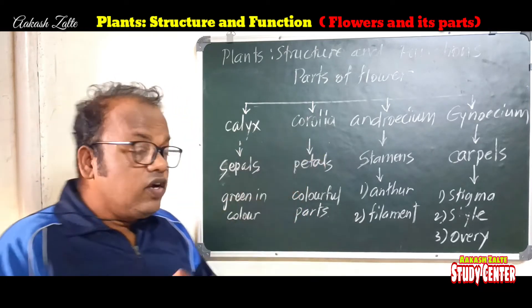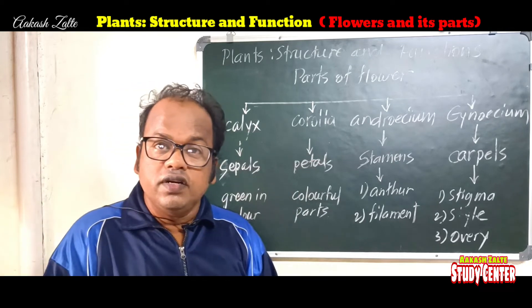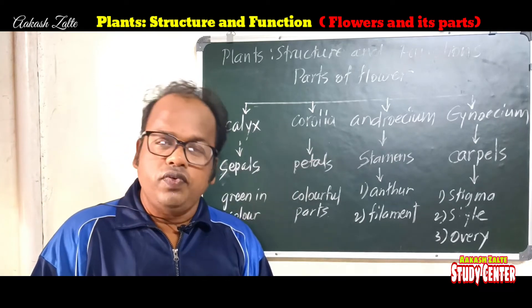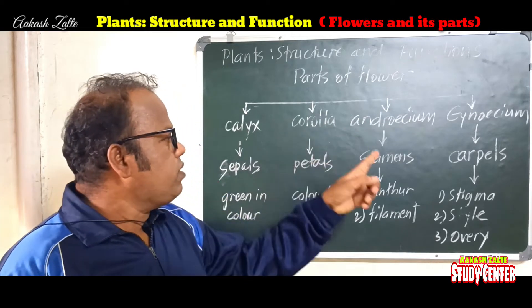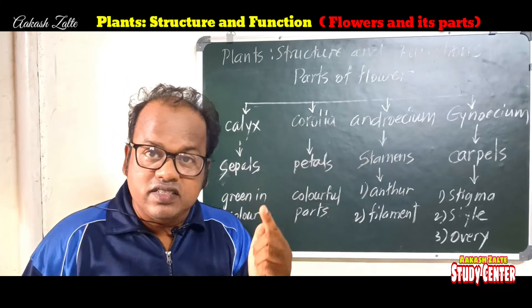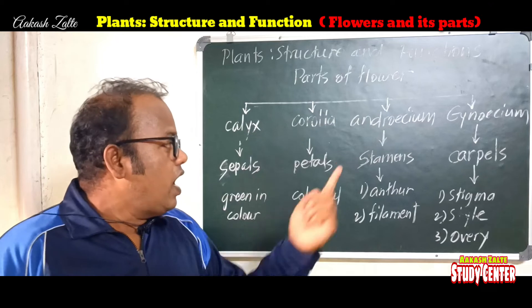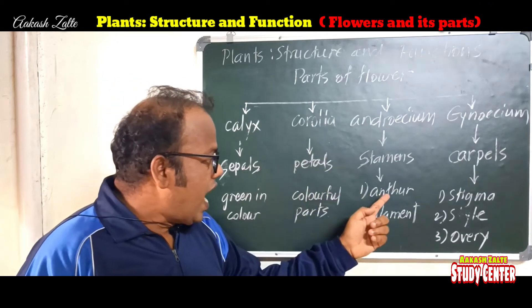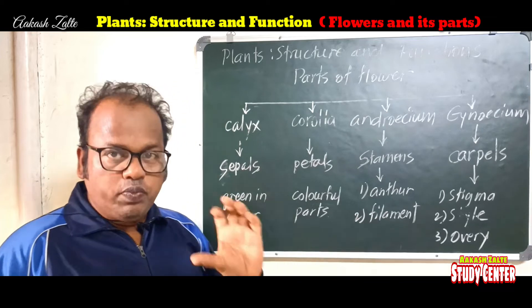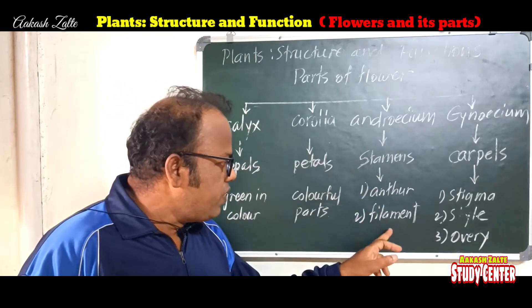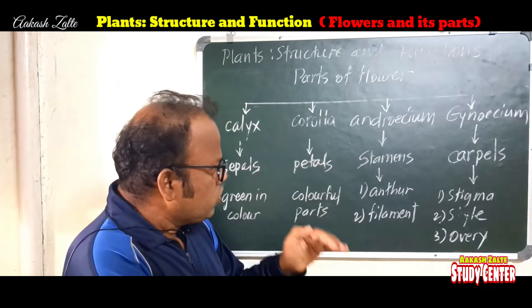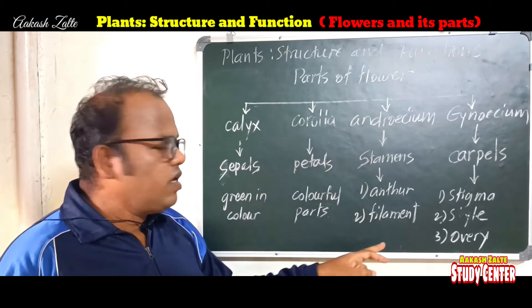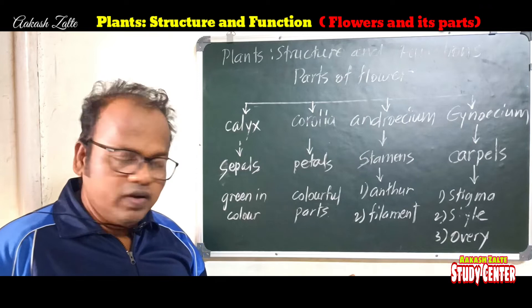Androsium is a male reproductive organ in the flower. Androsium is made up of stamens. Stamens are made up of anther and filament — two parts of stamens. Anther and filament together are called a stamen. So these are the male reproductive organ of any flower.